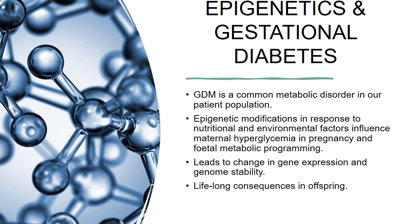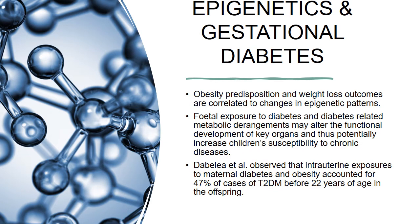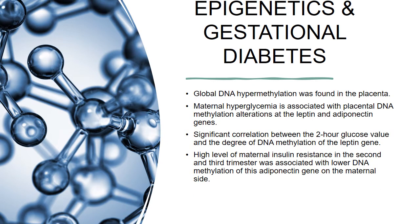Epigenetics and gestational diabetes: Gestational diabetes is a common metabolic disorder in our patient population. Epigenetic modifications in response to nutritional and environmental factors influence maternal hyperglycemia in pregnancy and fetal metabolic programming. This leads to change in gene expression and genome stability and has a lifelong consequence in the offspring. Obesity predisposition and weight loss outcomes are correlated to changes in epigenetic patterns. Fetal exposure to diabetes and diabetes-related metabolic derangements may alter the functional development of key organs and thus potentially increase children's susceptibility to chronic diseases. Dabila et al observed that intrauterine exposures to maternal diabetes and obesity accounted for 47% of cases of type 2 diabetes mellitus before 22 years of age in the offspring. Global DNA hypermethylation was found in the placentas of patients with gestational diabetes.